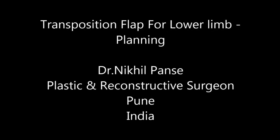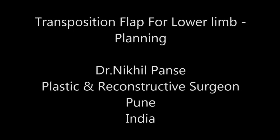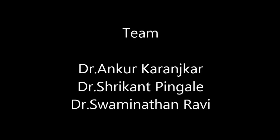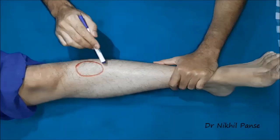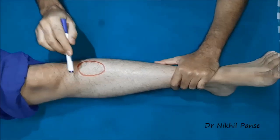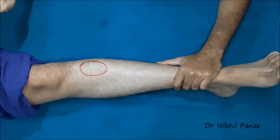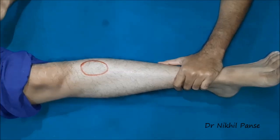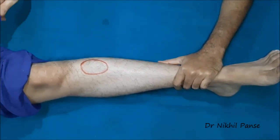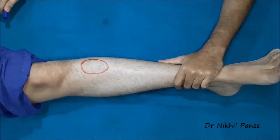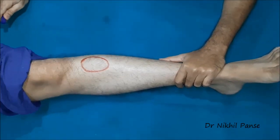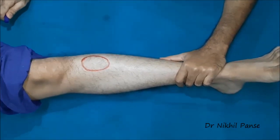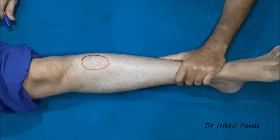This video demonstrates the planning of a transposition flap for a lower limb defect. This is a proximal tibial defect. Some surgeons prefer to triangularize their defects for planning, but for lower limb I don't triangularize my defect. I will demonstrate how we plan a transposition flap for a tibial defect.